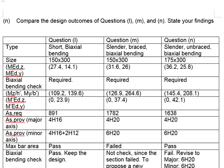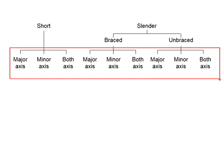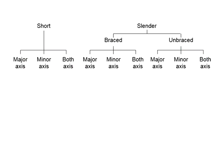So far, we have done quite a number of examples about the design of columns under different circumstances. There are short and slender columns under braced and unbraced conditions, subjected to the moment acting in the major axis, minor axis, or both axes. This links to 9 different cases that you can deal with for a typical column.